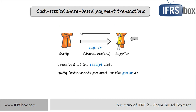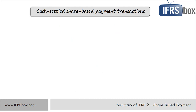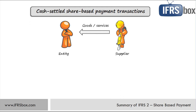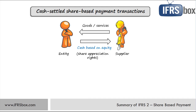Let's take a look at cash-settled share-based payment transactions. In these transactions, an entity acquires certain goods or services from the supplier, including employees, and pays for these services with cash or other assets in an amount determined by reference to its own equity instruments — for example, share appreciation rights, where an employee gets payment based on the entity's share price increase, or rights to mandatory redeemable shares. As these transactions are typical and common in employee remuneration, let's focus on the measurement of share appreciation rights.